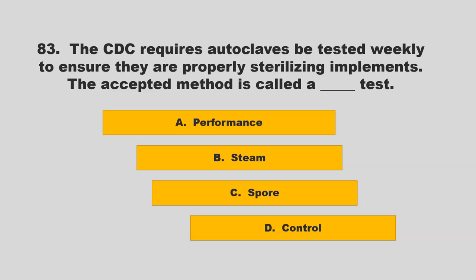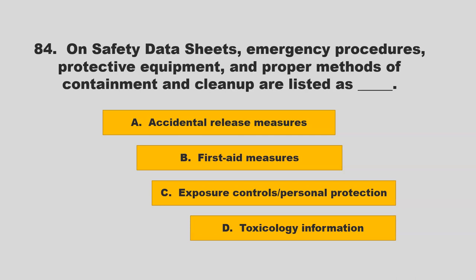The CDC requires autoclaves be tested weekly to ensure they are properly sterilizing implements. The accepted method is called a blank test. Options: performance, steam, spore, or control. The correct answer is C: spore.